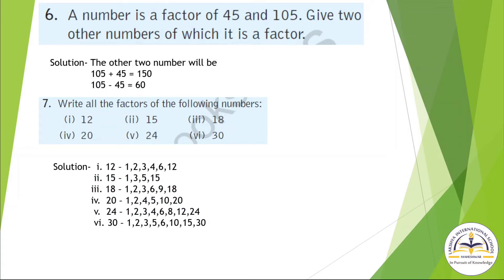Question No. 6: A number is a factor of 45 and 105. Give 2 other numbers of which it is a factor. In the same manner, we have to add them and subtract them, then we will get 2 factors. Question No. 7: Write all the factors of the following number. For 12: 1 is the factor of all numbers, so we write 1, then 2, 3, 4, 6, and 12 also — because it is the rule of factors. In the same manner, you have to solve other questions.